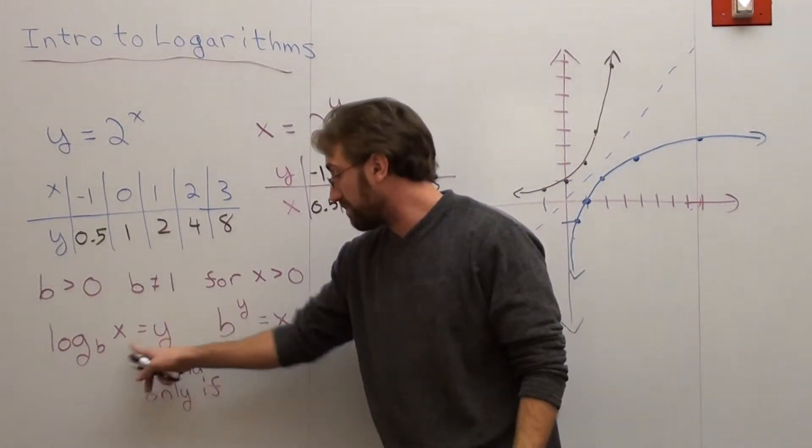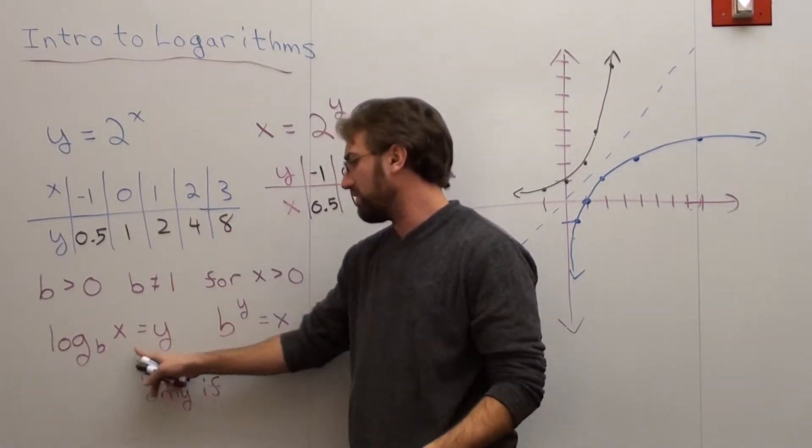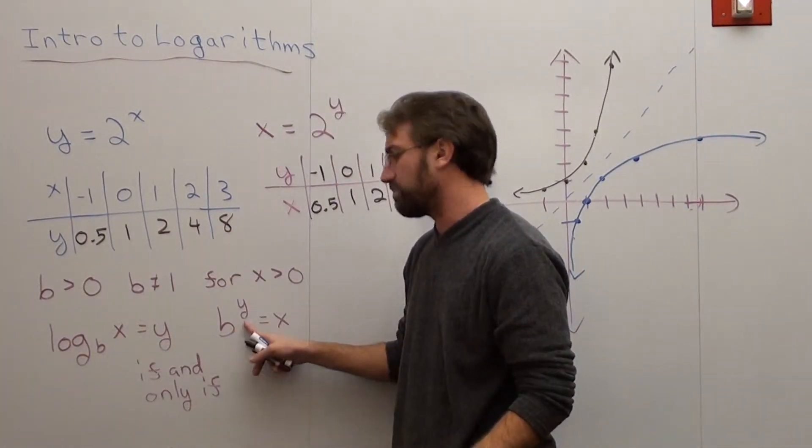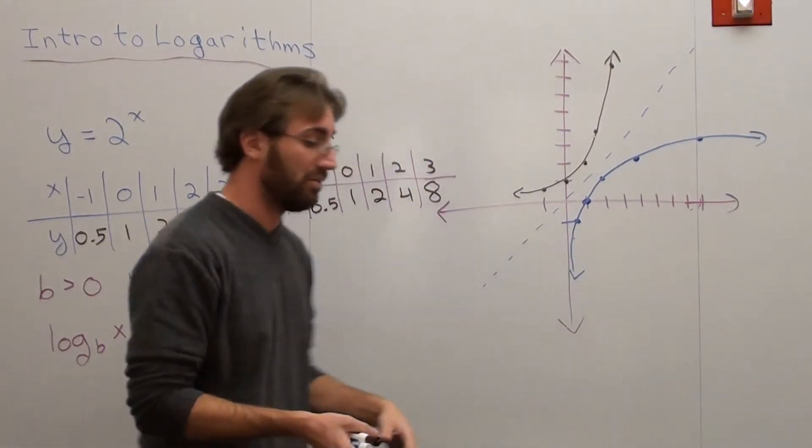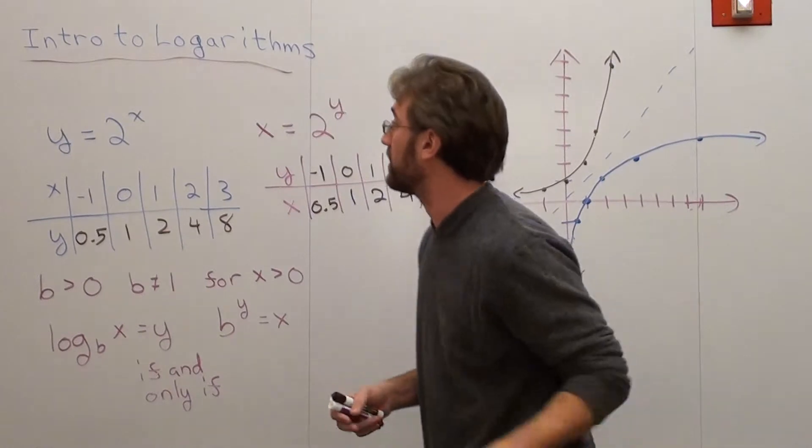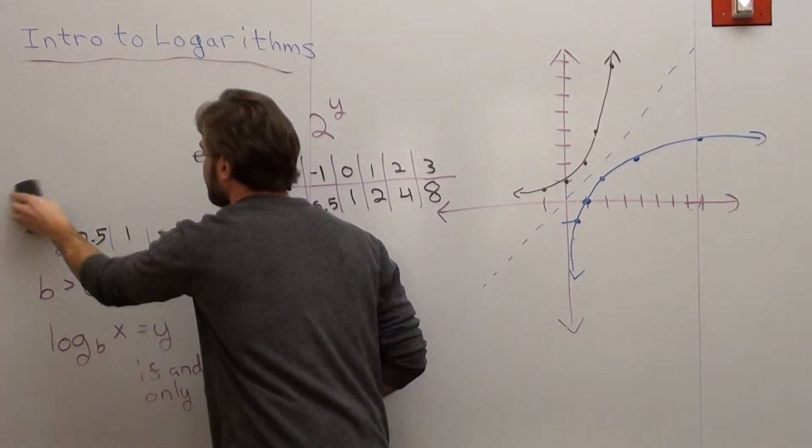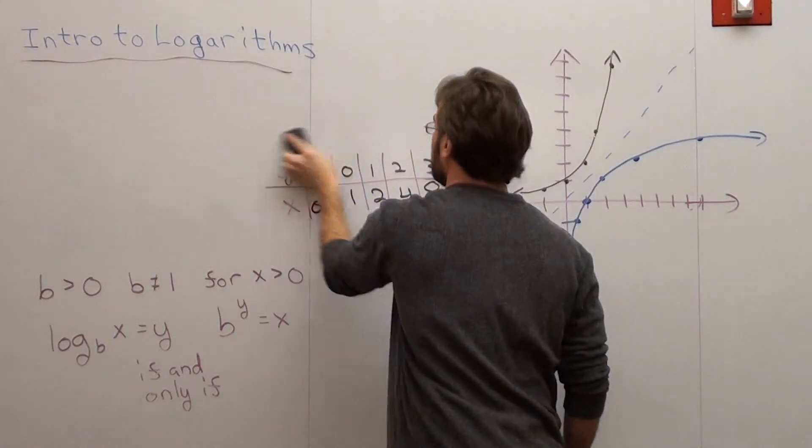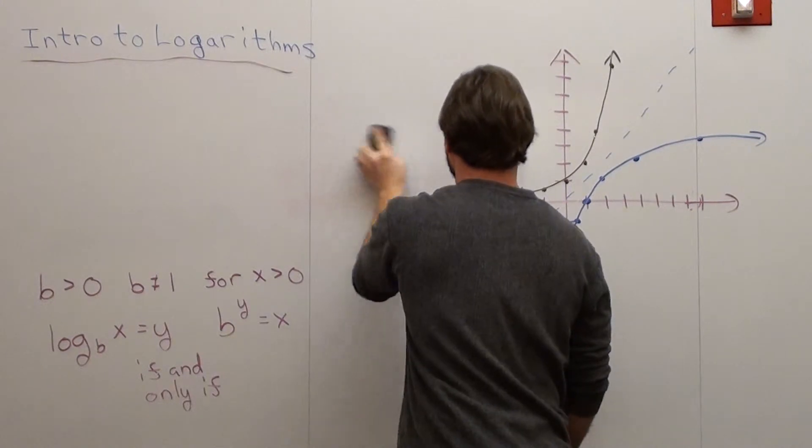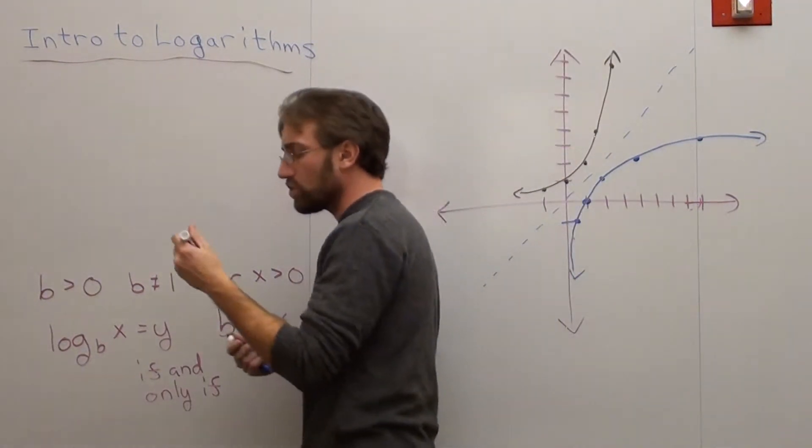And this is only... This stipulation is if and only if all these are true. So log base b of x equals y is the same thing as the base of y equals x. And that's what we're going to get to right now. But in order to do that, I have to erase some steps here. Not steps, but some work. So I'm going to go ahead and do that. And I'm going to go ahead and erase this too. I'm going to leave the graph because it's nice and pretty.